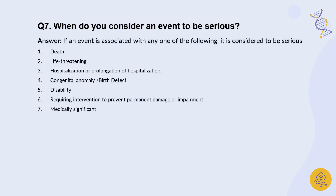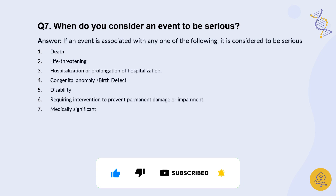As a pharmacovigilance professional, you need to know the seriousness criteria for adverse events, similar to those used in clinical research. A serious adverse event is one where the patient has died, is in a life-threatening condition, requires hospitalization or prolongation of hospitalization of more than 24 hours, has a congenital anomaly or birth defect, has a disability, requires intervention to prevent permanent damage or impairment, or involves any medically significant event. Such events qualify as a Serious Adverse Event, or SAE.